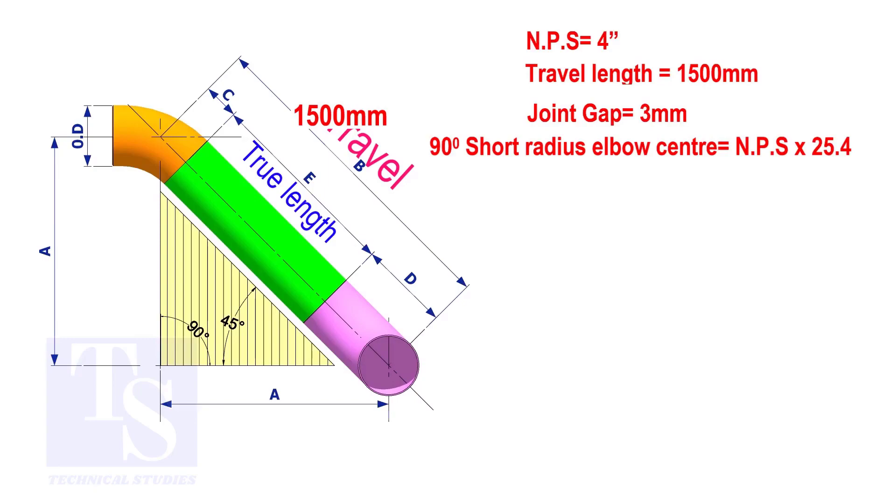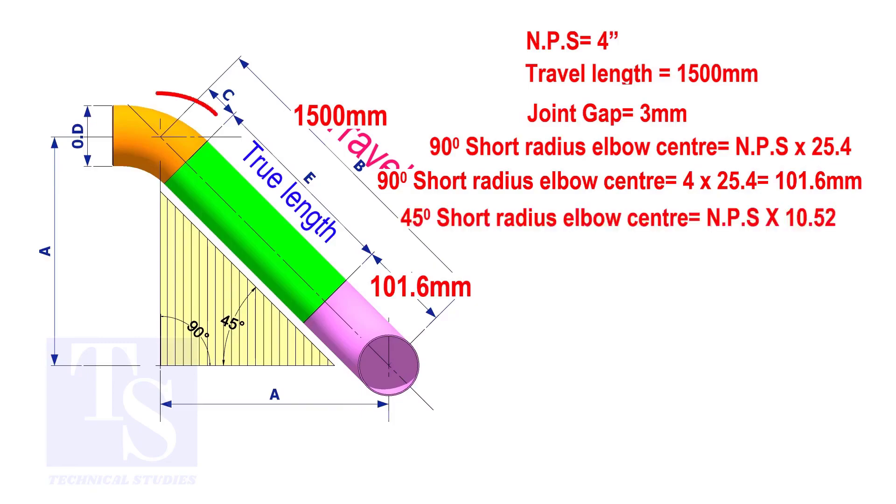To calculate the elbow center of a 90 degree short radius elbow, multiply the nominal pipe size by 25.4. The answer is 101.6 millimeters. To calculate the elbow center of a 45 degree short radius elbow, multiply the nominal pipe size by 10.52. The answer is 42.1 millimeters.